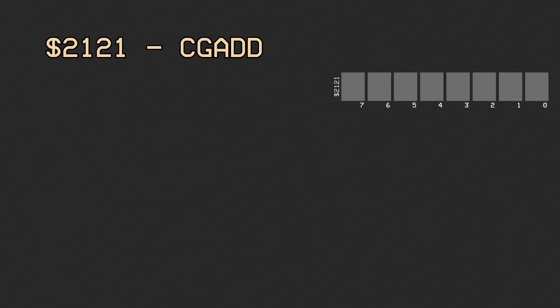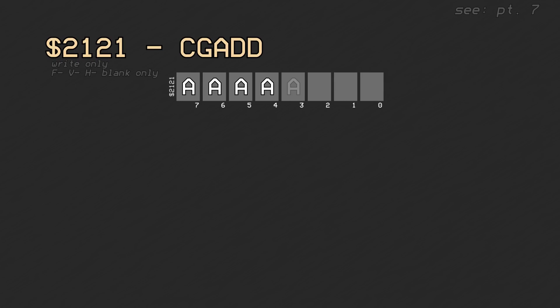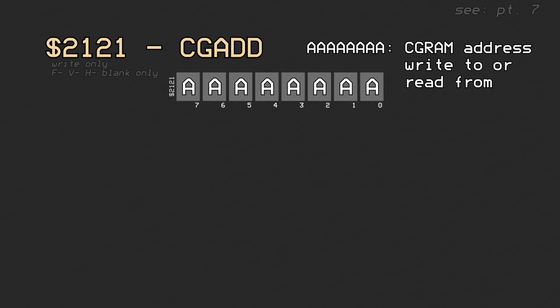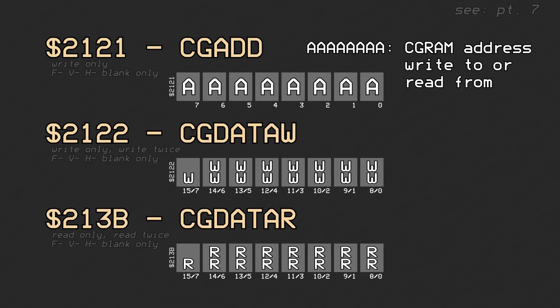CGRAM can be accessed by using PPU register 0x2121 to write an 8-bit CGRAM word address, and using PPU registers 0x2122 and 0x213B to write to or read from respectively. CGRAM addresses range from 0x00 to 0xFF, so only one address register is needed. The two data registers are still write-twice and read-twice in the order of lower 8 bits and upper 7 bits. The address register is automatically incremented upon writing or reading a word of data.